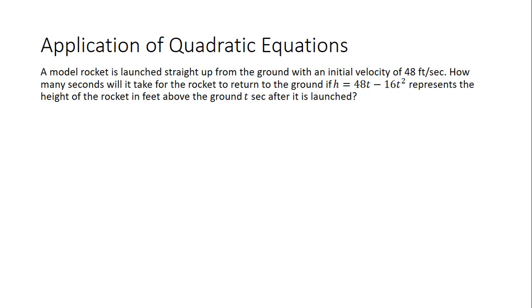The problem says a model rocket is launched straight up from the ground with an initial velocity of 48 feet per second. How many seconds will it take for the rocket to return to the ground if h equals 48t minus 16t squared represents the height of the rocket in feet above the ground t seconds after it is launched?